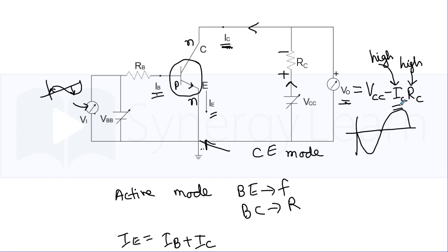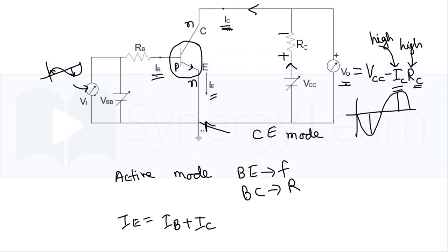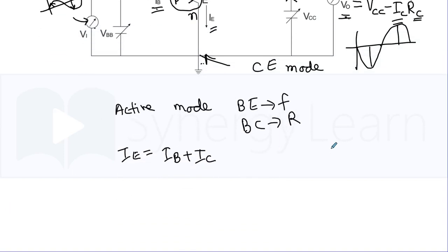As a result of high collector current and high resistance, amplitude of the output becomes very large and amplification is achieved. The ratio of collector current to base current is known as beta, called current gain in common emitter mode.